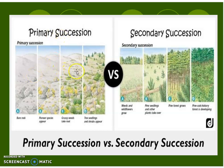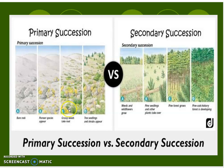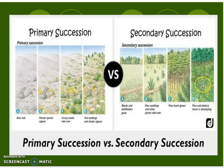Here is primary succession versus secondary succession. Remember, primary succession starts with bare rock. The pioneer species, which is usually lichen, grow. Then we start to get grasses and weeds and then a few trees. Secondary succession — we're left with the soil. Then we have some grasses and small trees grow. The trees grow bigger and then it becomes a lush forest.